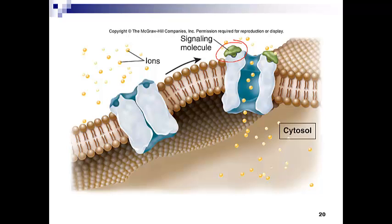This doesn't have to be at the cell membrane — it could be the membrane of the sarcoplasmic reticulum, for example. So it's not just at the cell surface that this can happen; it can also occur within the eukaryotic cell itself.